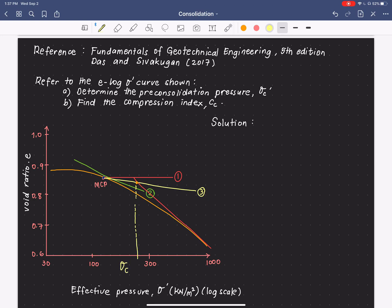Okay, although this is not drawn to scale, the result of this graphical solution is 160 kilonewton per square meter as our preconsolidation pressure.